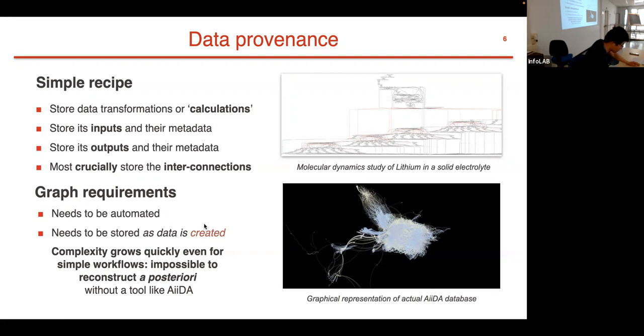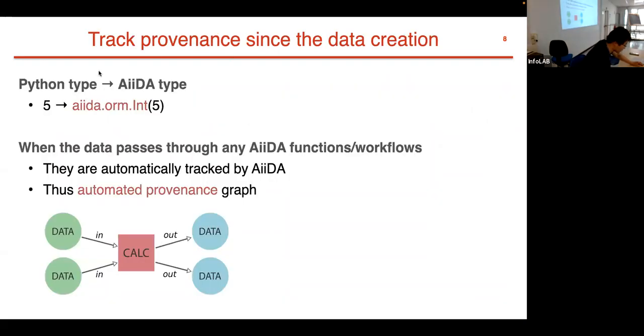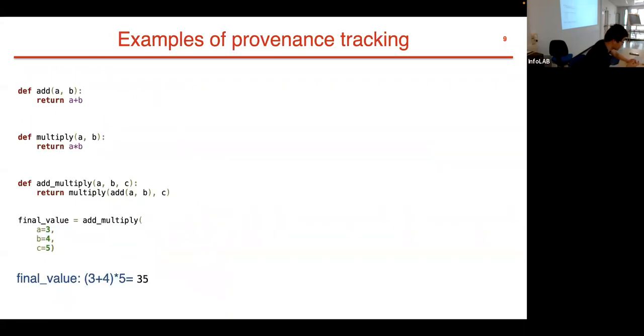How does AiiDA automatically generate this provenance graph? In AiiDA we track the provenance since the data creation. Instead of simple Python types like the integer 5, we use AiiDA types called aiida.orm.Int. It seems a little bit complex, but essentially by using AiiDA types, AiiDA itself can automatically track the provenance of the data. For example, when we pass this Int(5) as an input to the calculation, AiiDA will automatically track the input and track its generated output. That's why AiiDA can automatically generate the provenance graph.